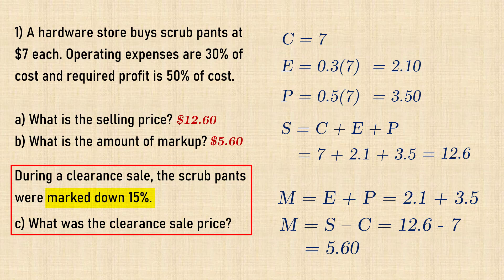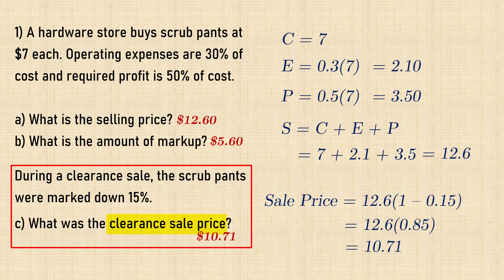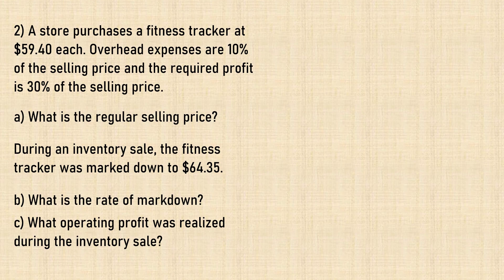In part C, we have a 15% markdown. That is, the regular price of $12.60 is reduced by 15%. So the clearance sale price will be $10.71.